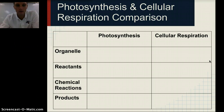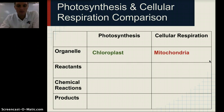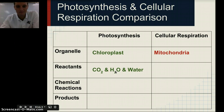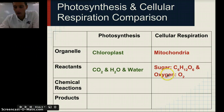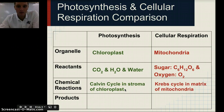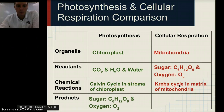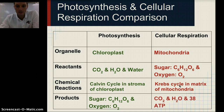If we compare the two, here's a quick comparison table — you could also use a Venn diagram. Photosynthesis occurs in the chloroplast; cellular respiration occurs in the mitochondria. For photosynthesis, the reactants are CO2, H2O, and sunlight. For cellular respiration, the reactants are sugar and oxygen. The chemical reactions are the Calvin cycle in the stroma of the chloroplast, and the Krebs cycle in the matrix of the mitochondria — you'll need to distinguish between those for the exceeds-proficiency portion. The products of photosynthesis are one sugar (C6H12O6, glucose) and oxygen (O2). The products of cellular respiration are CO2, H2O, and 38 ATP.